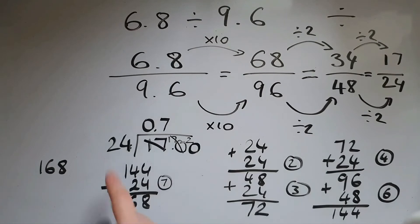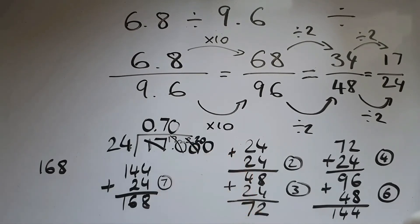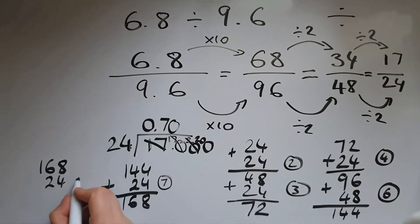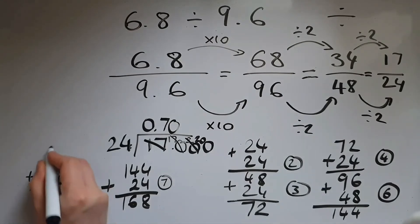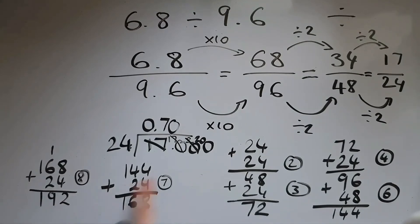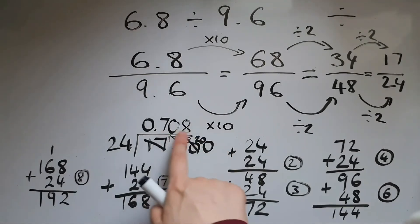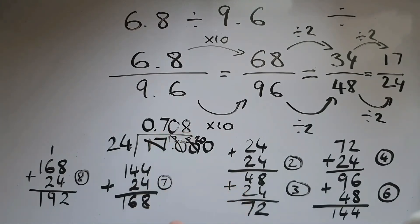We add a 0. How many 24s into 20? Zero lots, so carry 20. Into 200: we already know 7 lots gives 168, so adding another 24 makes 8 lots: 192, which is very close to 200. We can continue, but it's a good point to stop with three decimal places. The answer so far is 0.708.